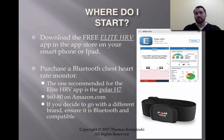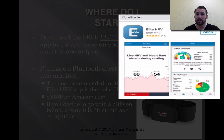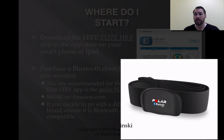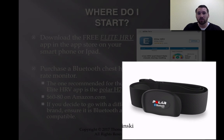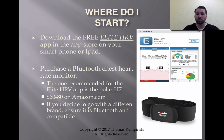If you're interested in this, where do you start? You start by downloading the Elite HRV app in the app store — you can get it on your smartphone or iPad. It's a free app; just search Elite HRV. You're also going to need to purchase a Bluetooth wireless chest heart rate monitor. The one that's compatible with this app is the Polar H7. You can find it on Google or Amazon for roughly $60 to $80. If you go with a different brand, you need to ensure that it's both Bluetooth and compatible with that app.